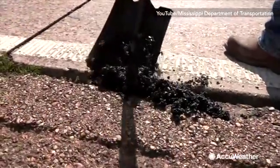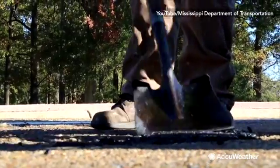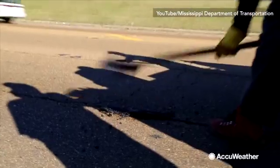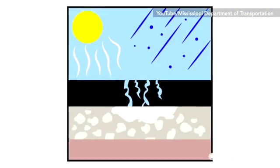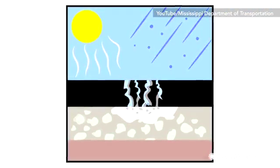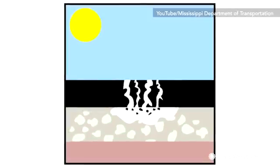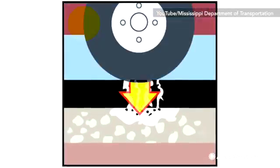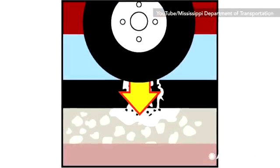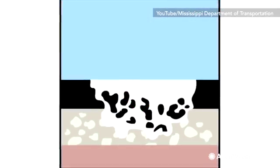In warmer climates, heat from the sun can cause cracks on the road, giving easy access for water to seep in. Periods of rain and drought conditions further weaken the road until a passing car makes it collapse under the weight.